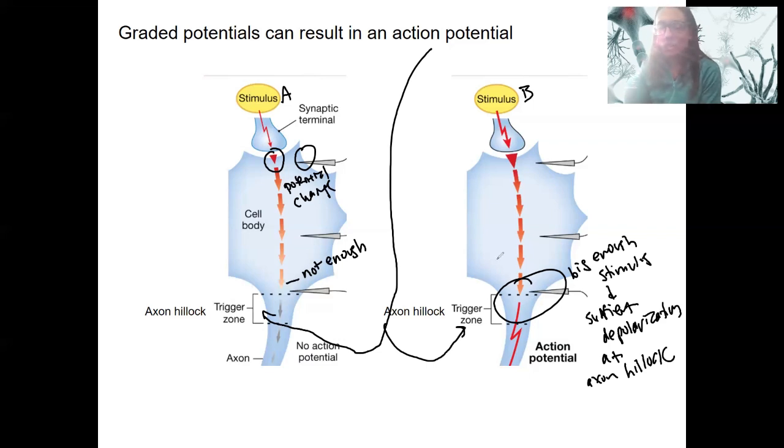Now, in reality, these graded potentials can sum in time and space. So there's not just one stimulus. There might be another one here and another one here. And another one. This one might fire twice. So this neuron might reach threshold, enough change in membrane potential at the axon hillock to fire an action potential, because of more than one graded potential in time or space. We are going to come back to this after we get through the action potential, neurotransmitter release, and get to the postsynaptic cell.